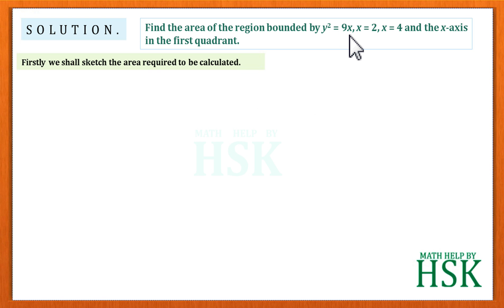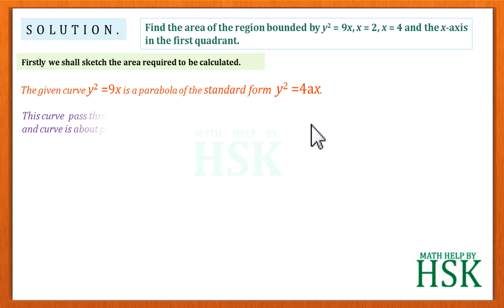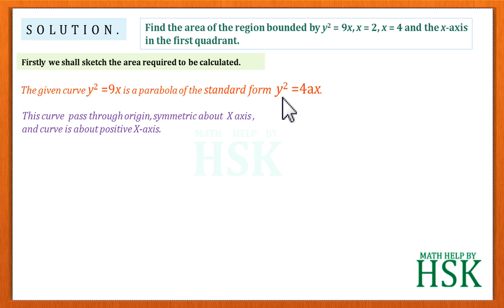If you don't have knowledge about y² = 9x, a few things you can always note: this parabola y² = 9x is a standard form of the parabola y² = 4ax. When you consider this standard form, the following things apply: firstly, this curve passes through the origin because it contains no constant term; it is symmetric about the x-axis because it contains the term y².